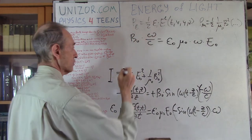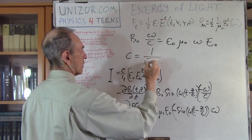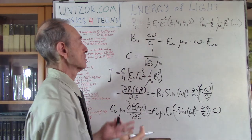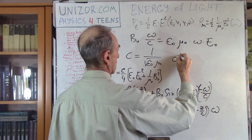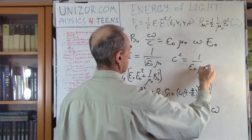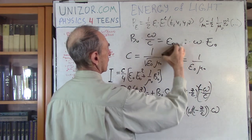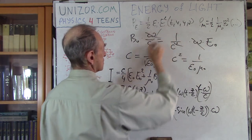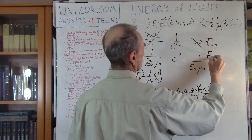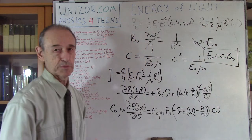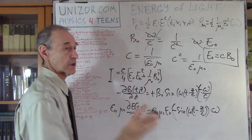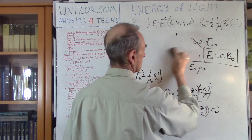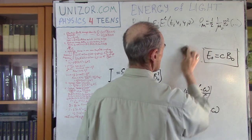We also know from the same lecture that c equals 1 over square-root(epsilon₀·mu₀), so c² equals 1 over (epsilon₀·mu₀). Substituting, epsilon₀·mu₀ equals 1/c². Cancelling omega from both sides gives E₀ equals c·B₀ — a simple dependency between E₀ and B₀ for harmonic monochromatic oscillations in vacuum.